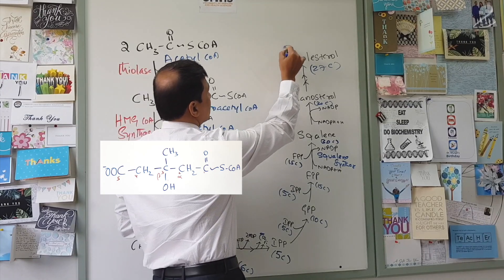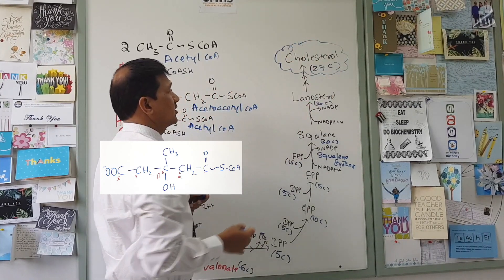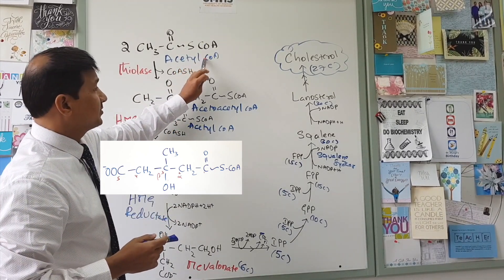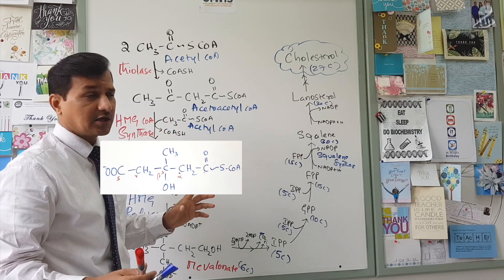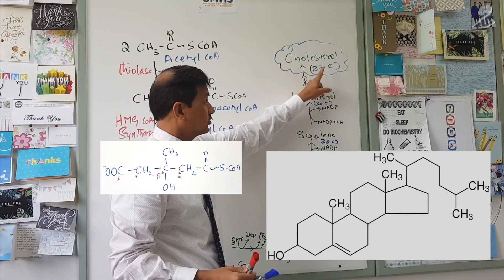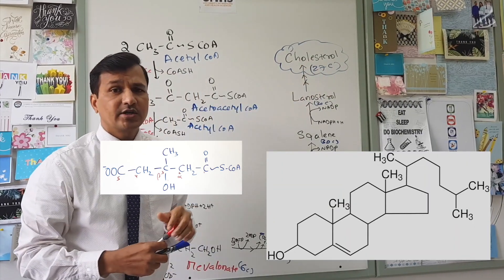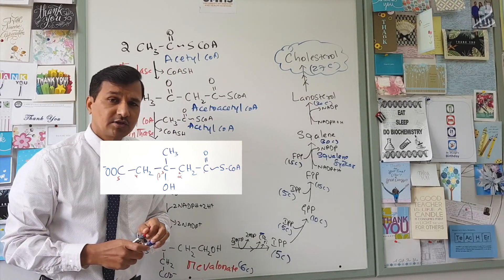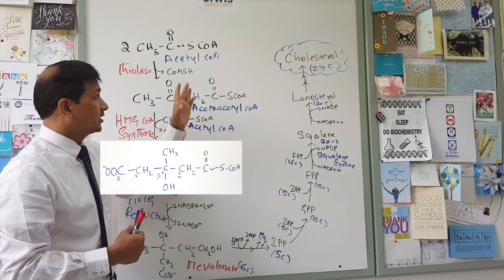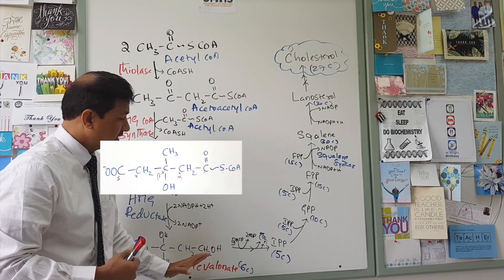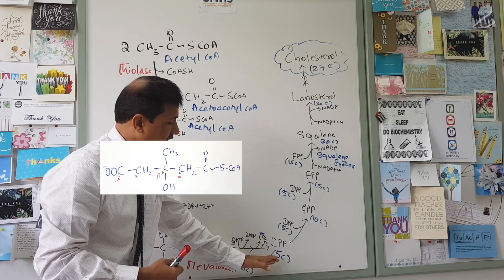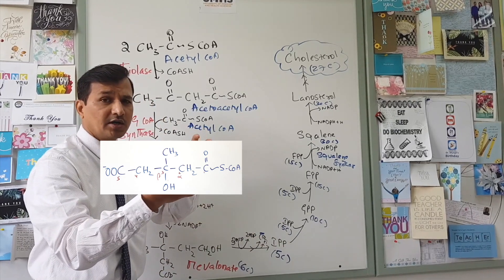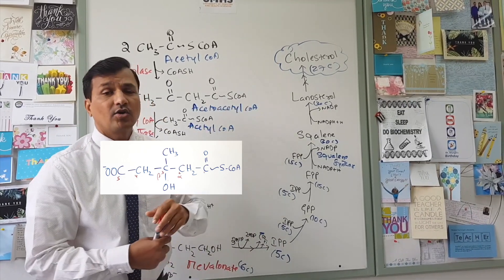So this is how a 27-carbon cholesterol molecule is synthesized starting from acetyl-CoA — all 27 carbons in cholesterol come from acetyl-CoA molecules. Three acetyl-CoAs condense to make mevalonate, mevalonate forms isopentenyl pyrophosphate, and these isopentenyl pyrophosphate units condense with one another, ultimately becoming cholesterol.